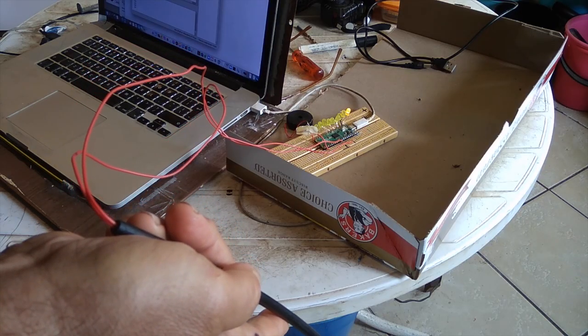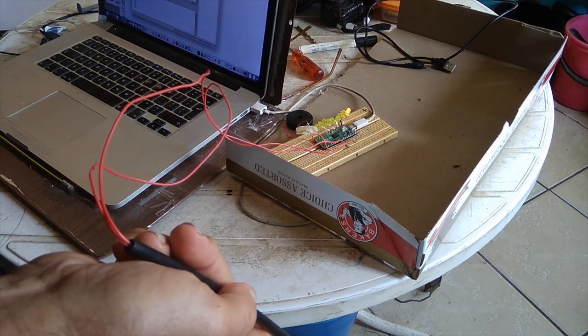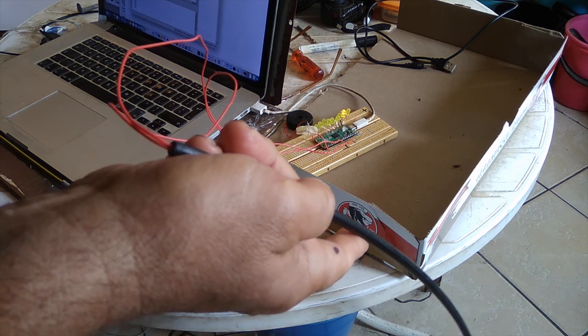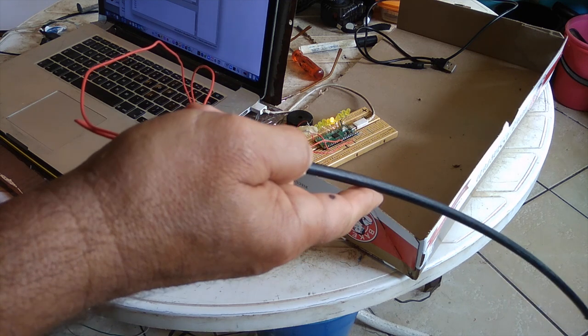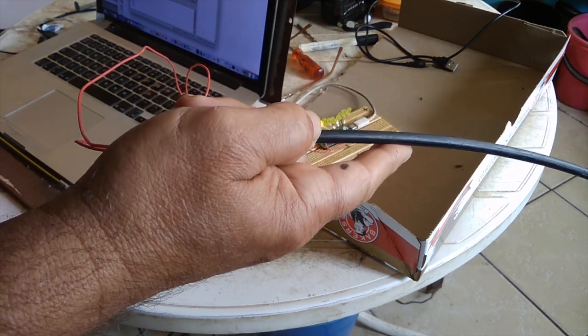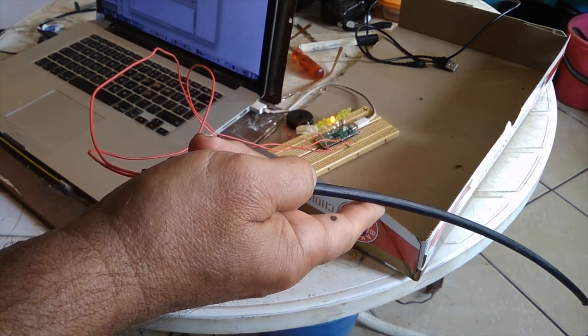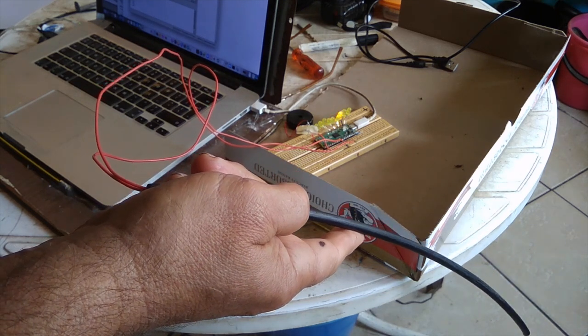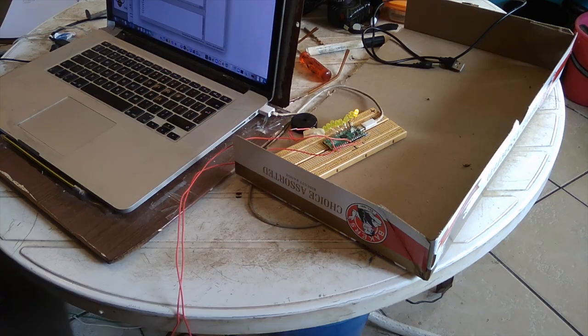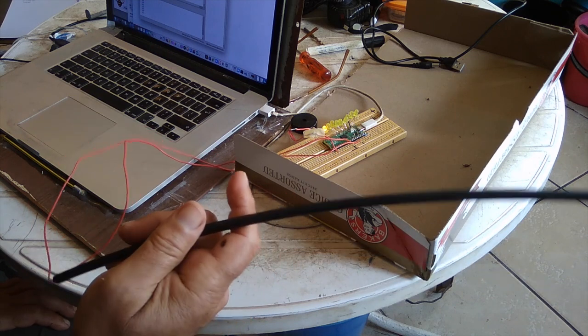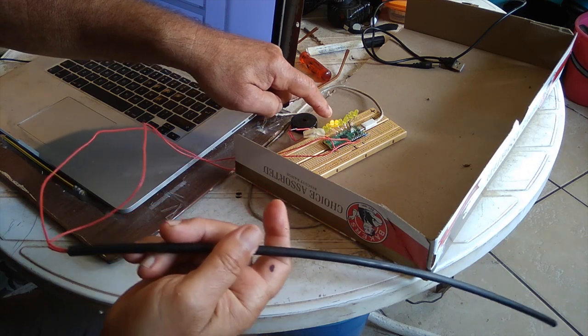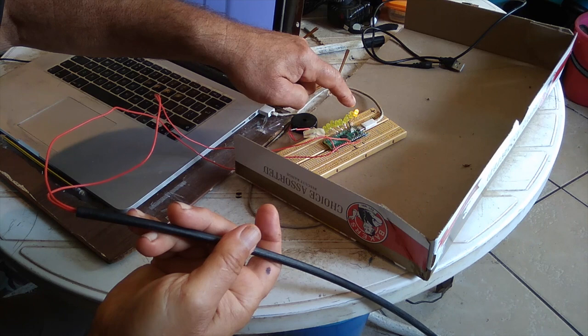So our sound wand is working. Let's just go through the scale first. There's C. So the wand works by, the more you point it towards the light, the higher the note. Then as you lower the wand, the lower the note.